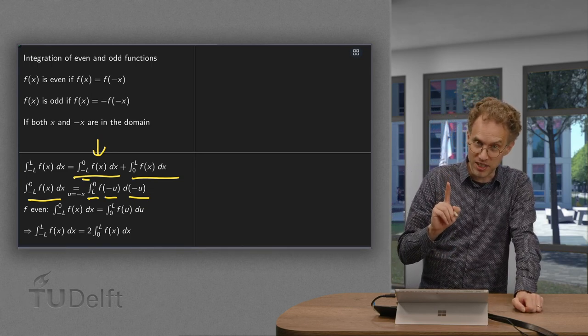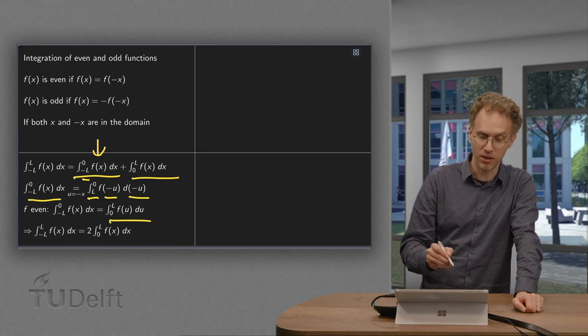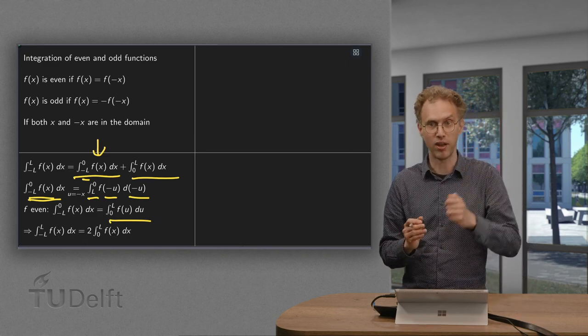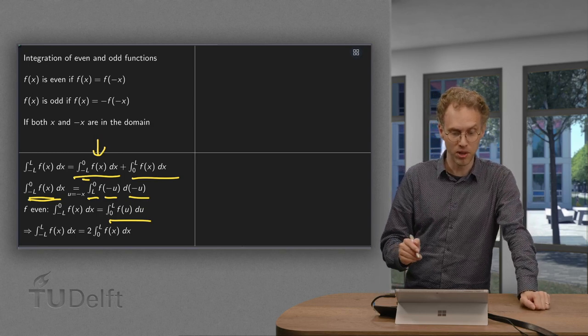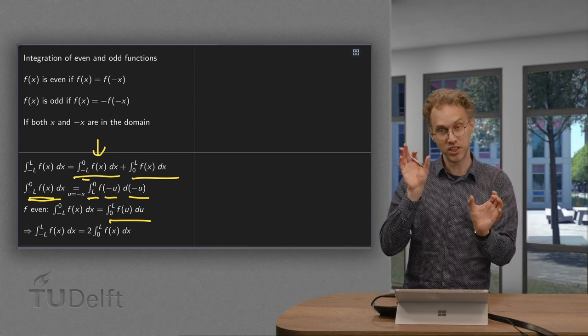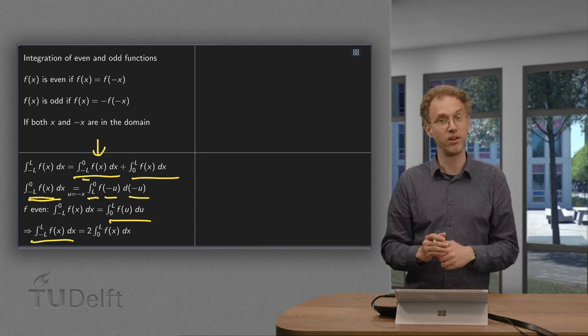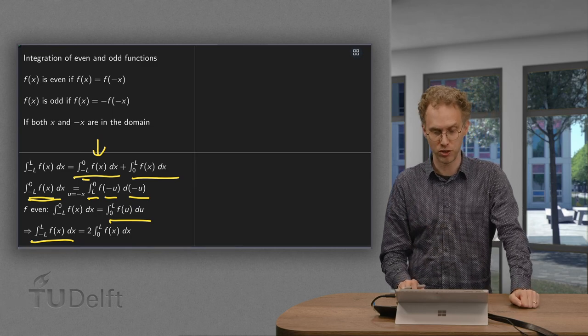Now, if f is even, then this f of minus u equals f of u, so in the end, the integral from minus l to 0 is the same as the integral from 0 to l, f of u du. However, u is only a dummy variable, so the integral from minus l to 0 is the same as the integral from 0 to l, or the integral from minus l to l equals twice the integral from 0 to l, which is sometimes useful.